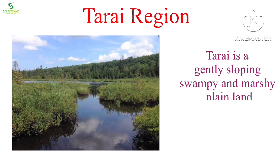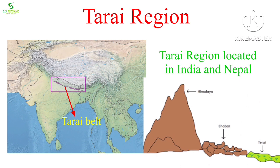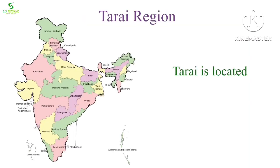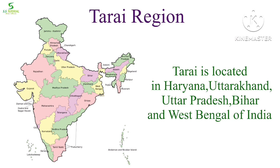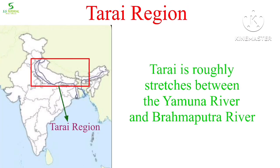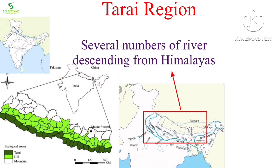Tarai is a gently sloping, wet, swampy, and marshy plain region located parallel to and south of the Bhabar belt, in the countries of India and Nepal. In India, the Tarai region extends over the union territories of Haryana and the states of Uttarakhand, Uttar Pradesh, Bihar, and West Bengal, stretching roughly between the Yamuna River in the west and the Brahmaputra River in the east.